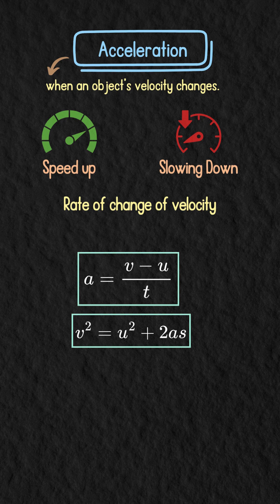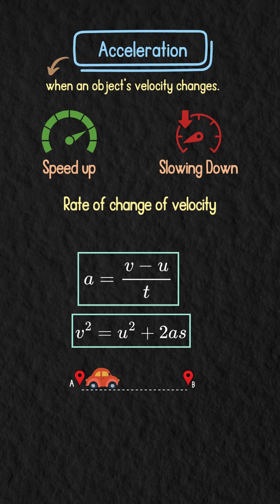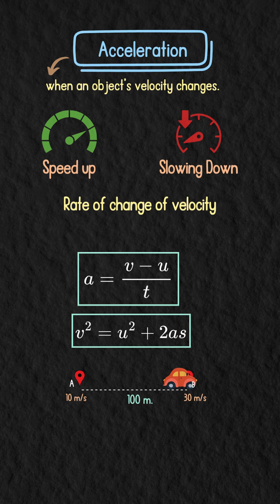For example, if a car's velocity changes from 10 to 30 meters per second over 100 meters, the acceleration comes out to 4 meters per second squared.